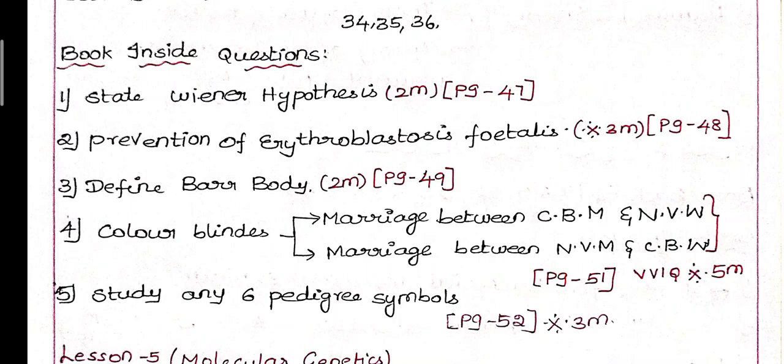This is on page 48, left side in the middle part. The definition of erythroblastosis fetalis and how to prevent it makes it a 3-mark question. Third question: Define Barr body, which is a 2-mark question on page 49.